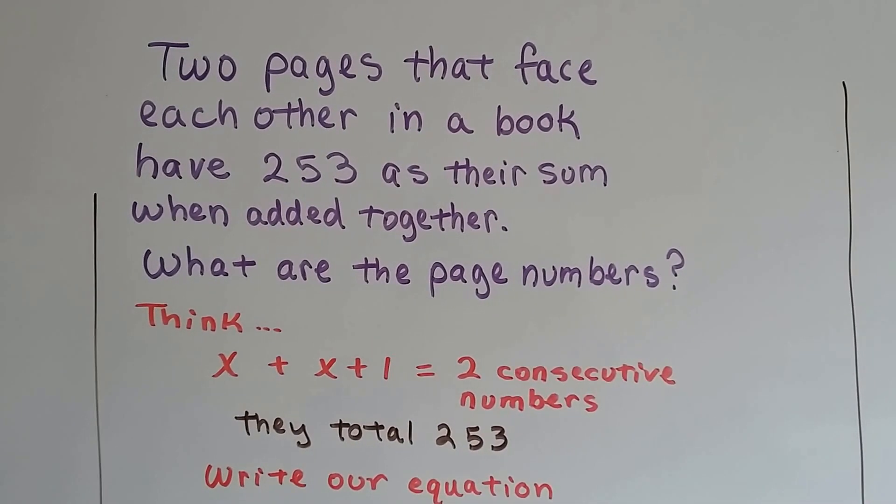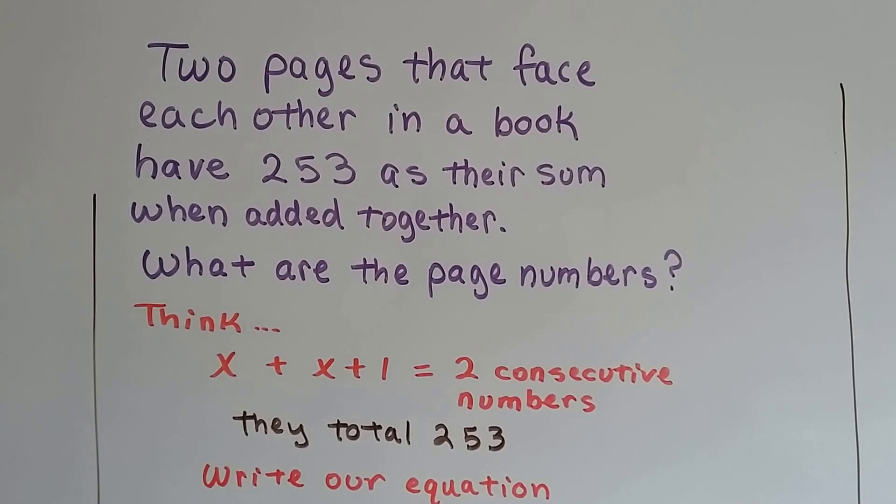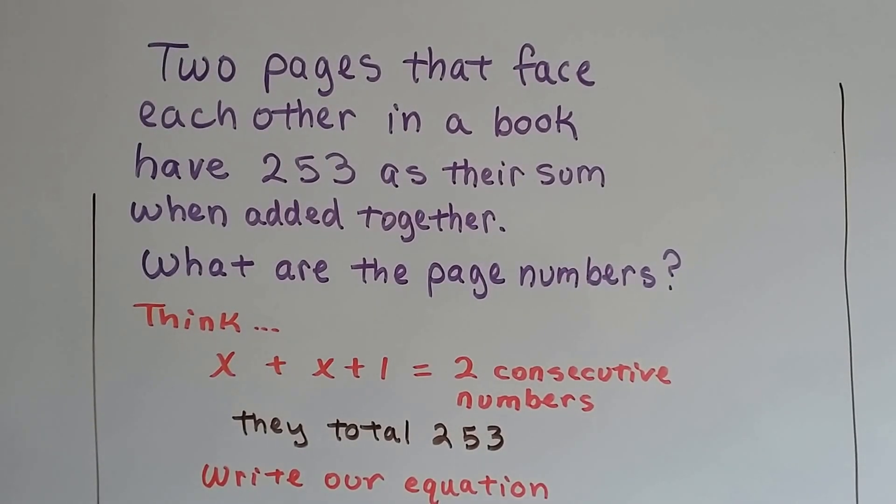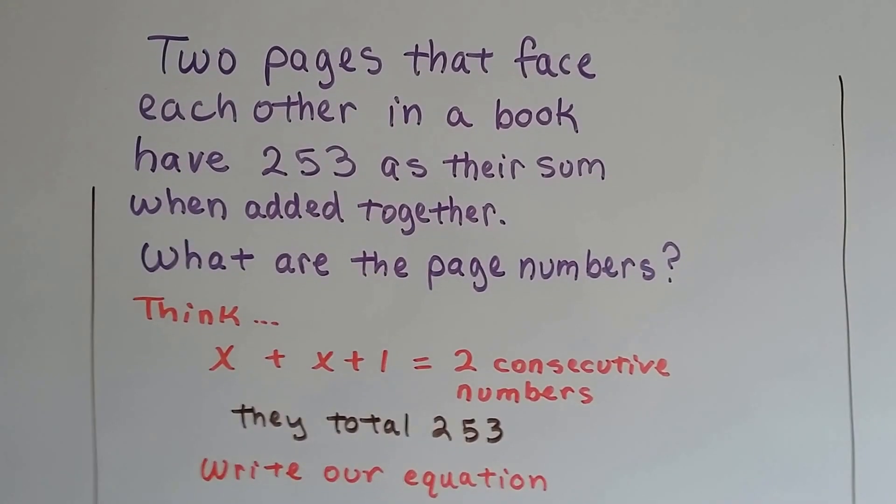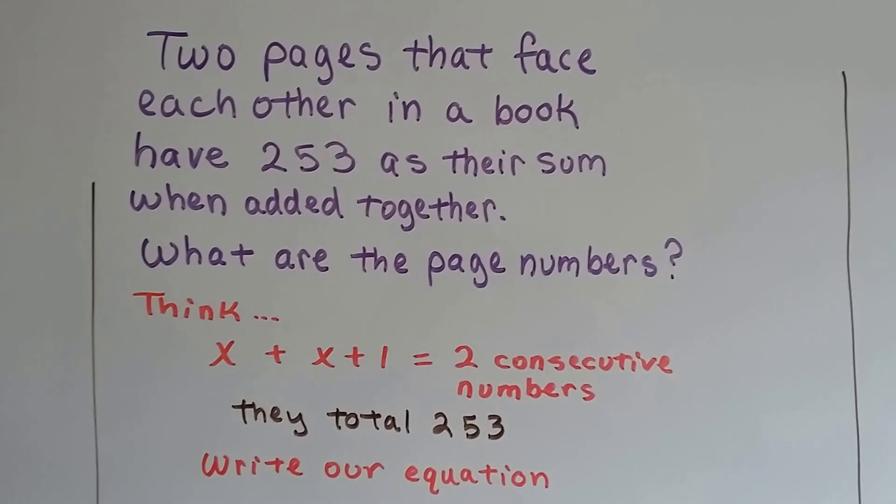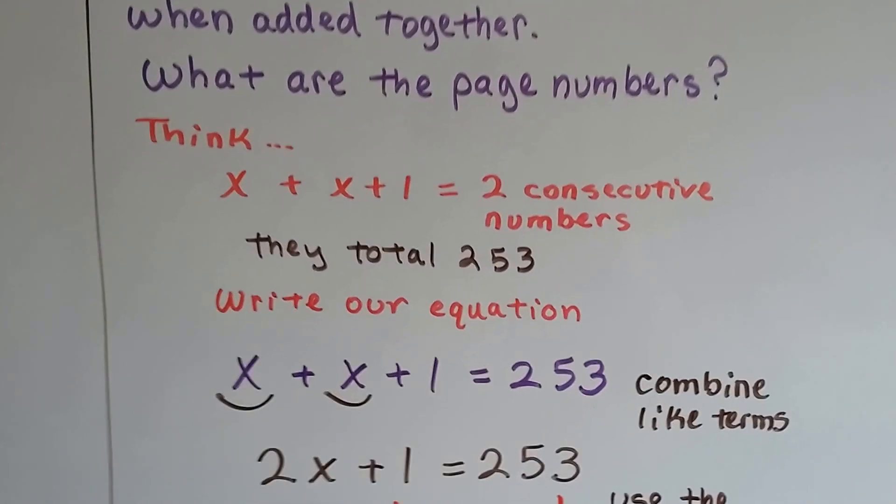Think, x is one page and x plus one is the second page. That's two consecutive numbers, x and x plus one. And they're going to total 253. So now we can write our equation.